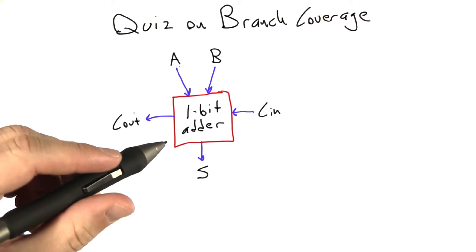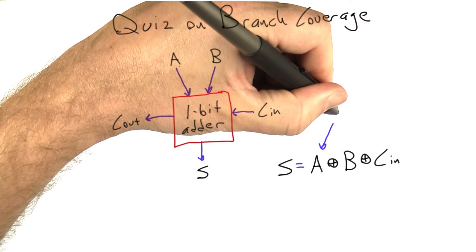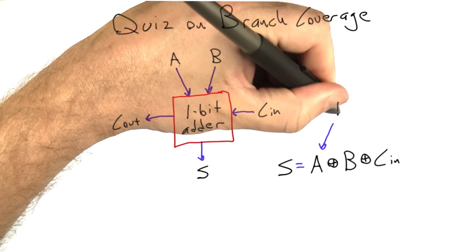The function implemented by the adder can be described like this. The sum is the A input exclusive ORed with a B input, exclusive ORed with a C input. And to do an exclusive OR on two Booleans in Python, we can simply use the not equals operator.